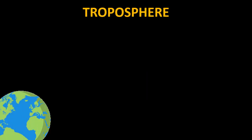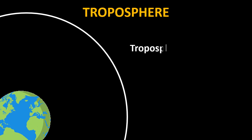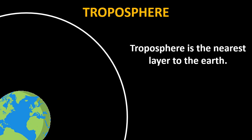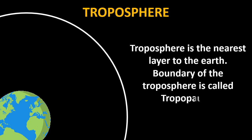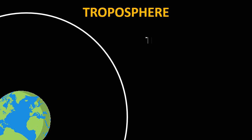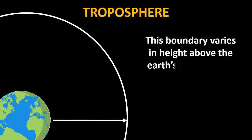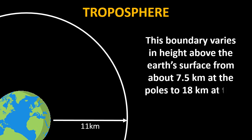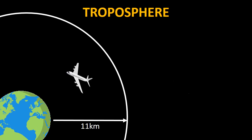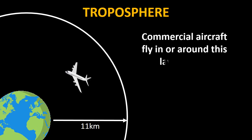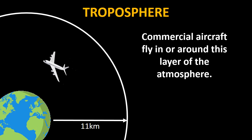The first layer is called the troposphere. The troposphere is the nearest layer to the earth. The topmost boundary of the troposphere is called the tropopause. The boundary varies in height above the earth's surface from about 7.5 km at the poles to 18 km at the equator, and the average value for the tropopause in the international standard atmosphere is around 11 km or 36,090 feet. Mostly commercial aircraft fly in or around this layer of the atmosphere.